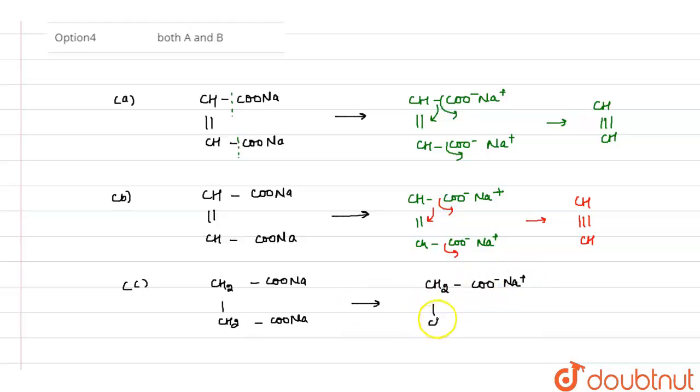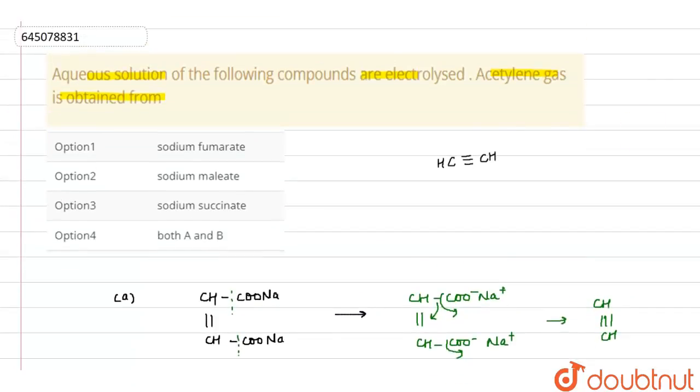These get changed into CH double bond CH₂, that means alkene is formed. And in this question we were asked about where acetylene gas, that means alkyne, is formed. So this is formed in option number first and second only.